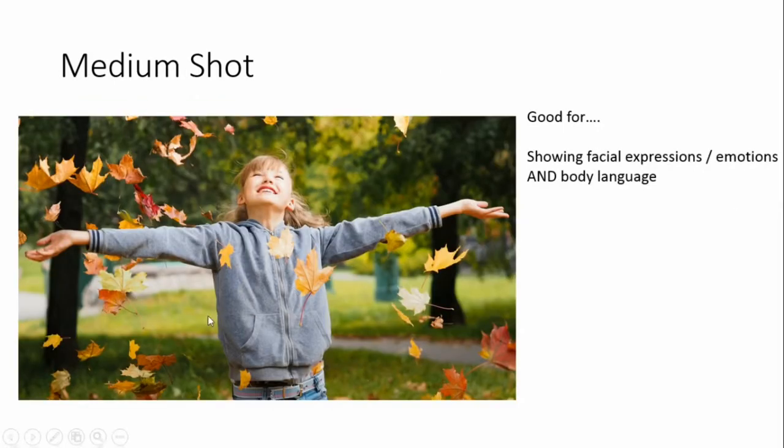In between those you get a medium shot, where you're seeing roughly half of a person or an object. This is a happy medium: whereas the close-up was all about facial expressions and emotions and the long shot was about body language, the medium shot lets you see a bit of both — their facial expressions and emotions as well as some of their body language.